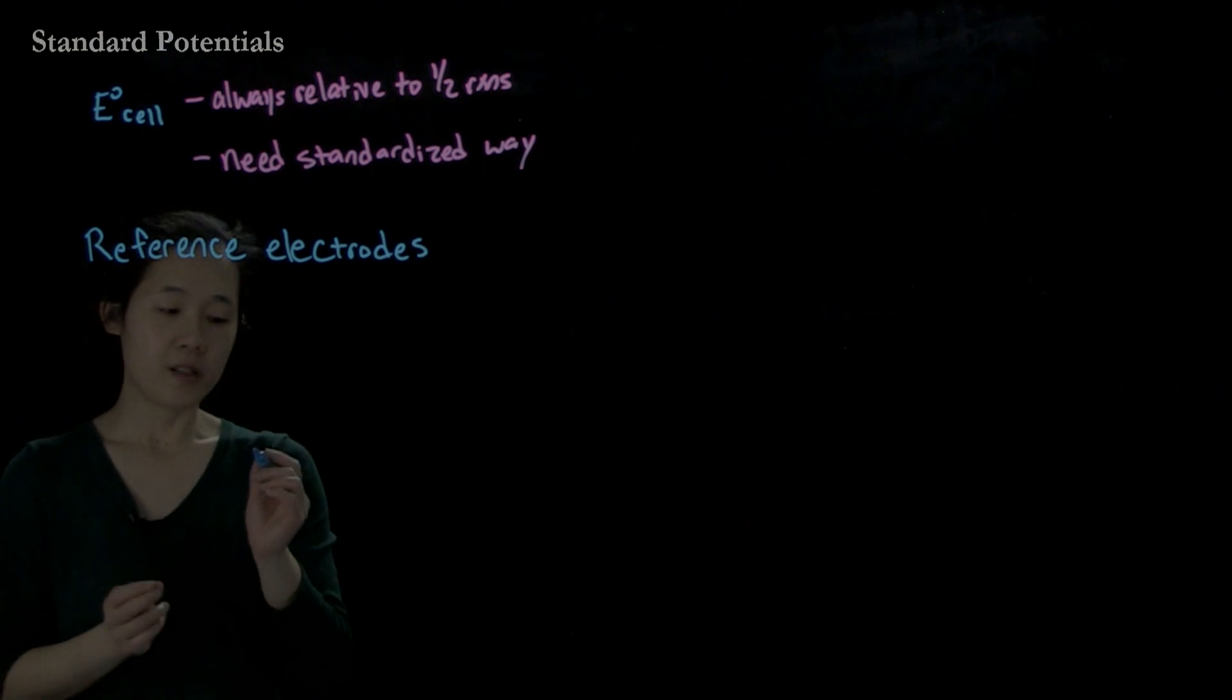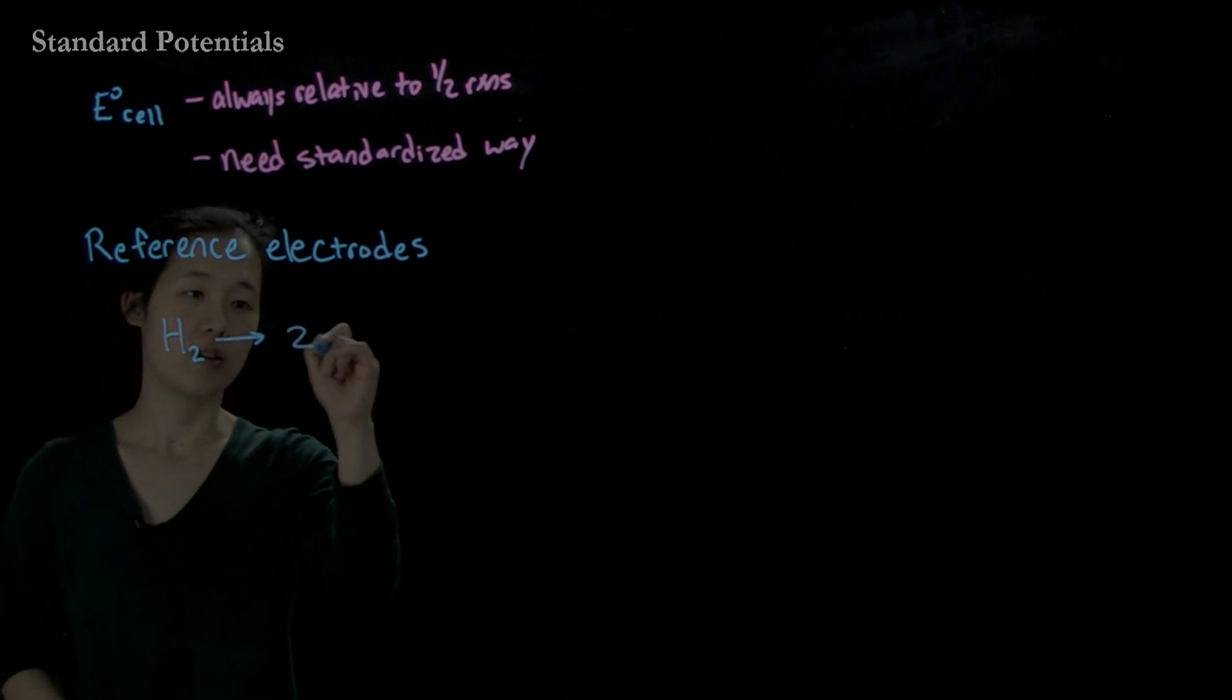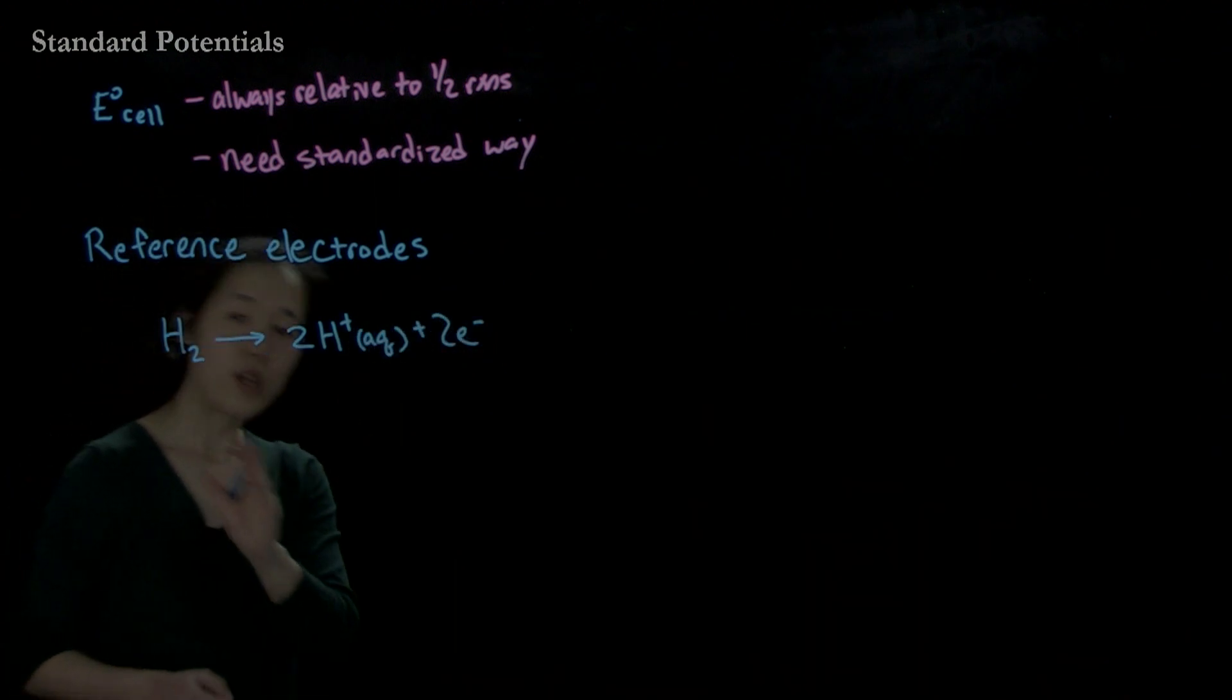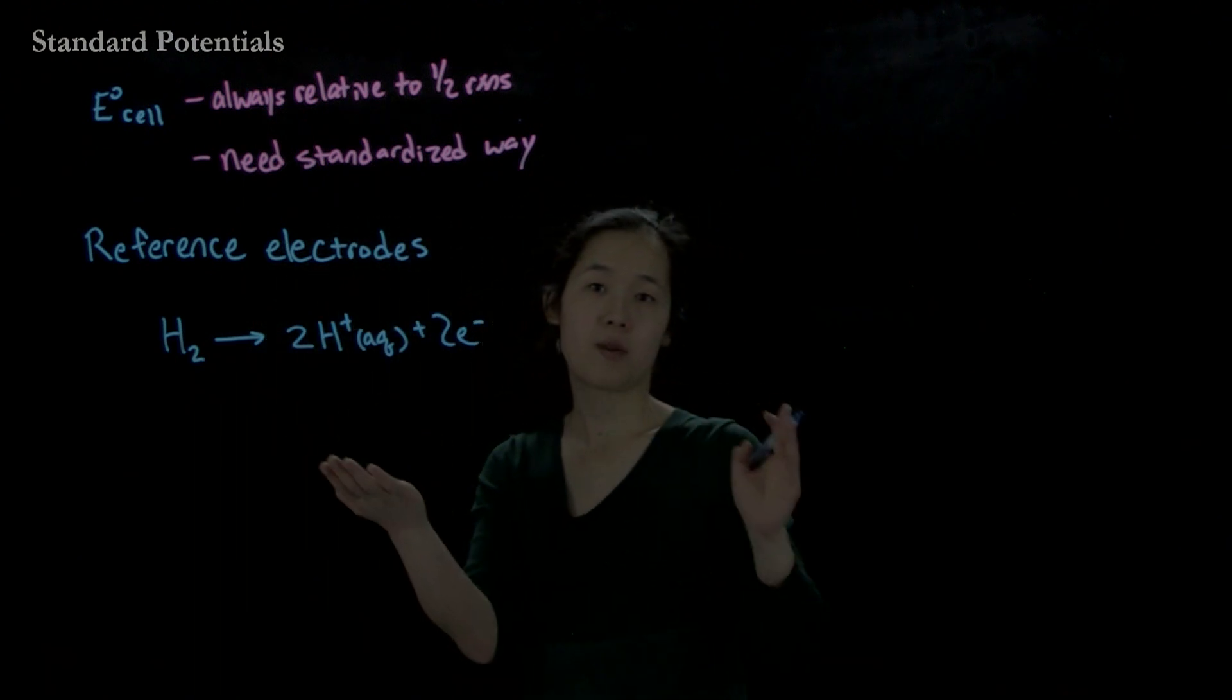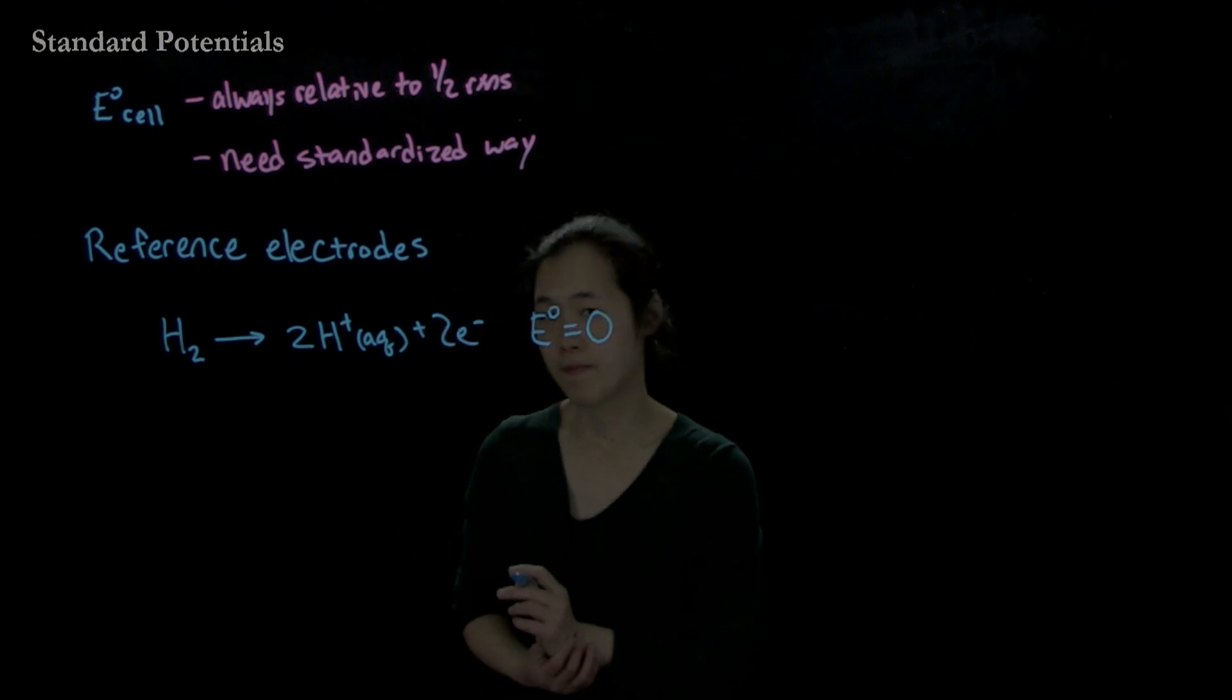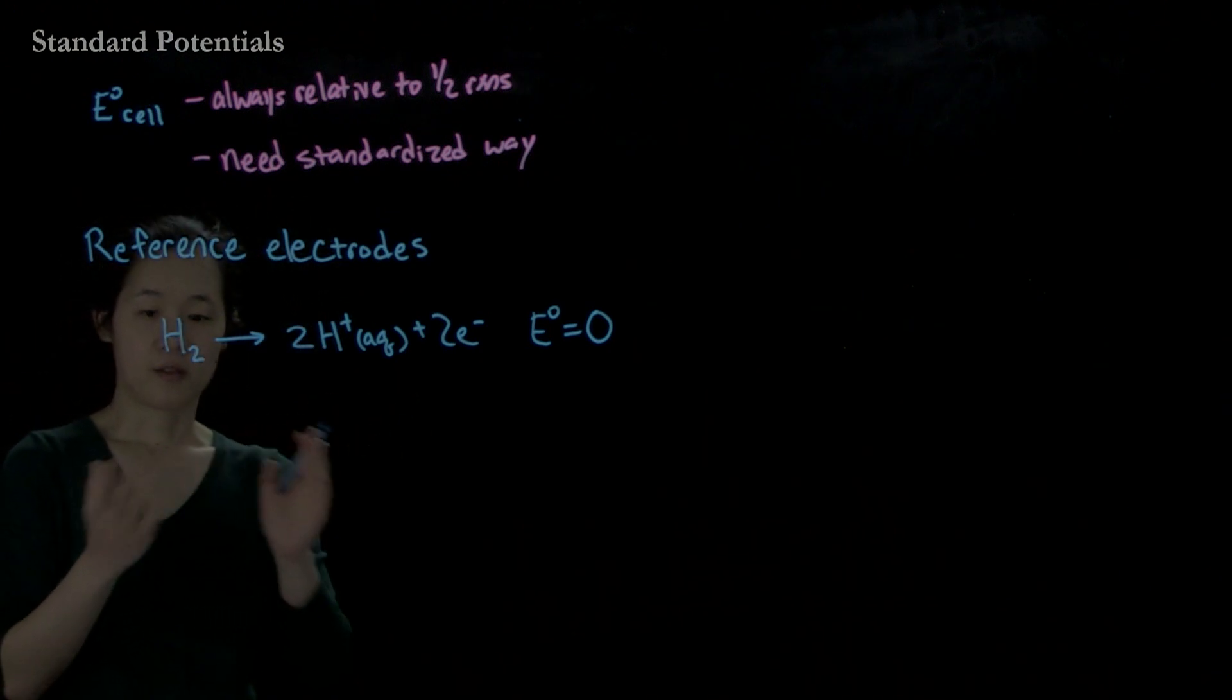For example, if we think about the oxidation of hydrogen gas going to two protons aqueous and two electrons, we will set this arbitrarily to zero. Again, this is all relative, it could be any number, but we'll set this to zero. So we'll say this E naught equals zero. Again, this is a half reaction. Then we make our electrochemical cell.